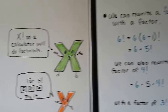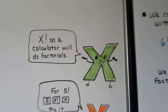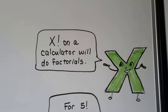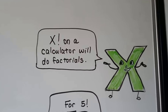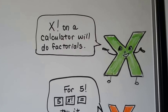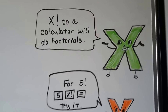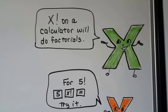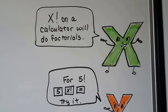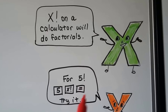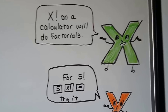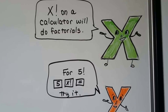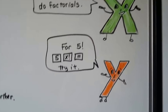Now you have a key on a scientific calculator, or if you turn your cell phone horizontally, you'll see an x with an exclamation point. You can do factorials. For 5 factorial, you just enter a 5, hit that x with the exclamation button, then hit equal, and it'll tell you 5 factorial is equal to 120. You should try it — you could do it with any number factorial.